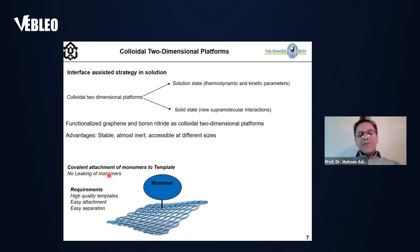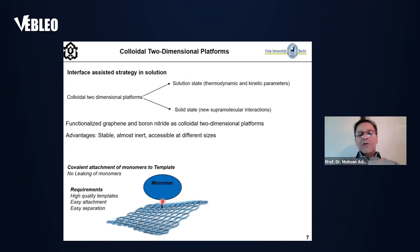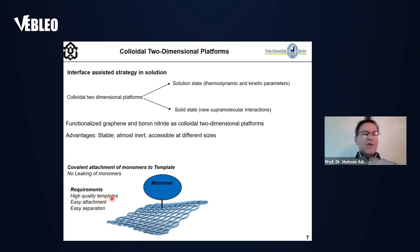However, to do this, we require high-quality graphene or boron nitride templates. We should also be able to attach our monomer or macromonomer at high density to the platform surface, and in the end, we should be able to easily separate our two-dimensional polymer from the platform.